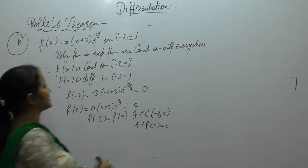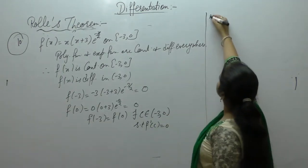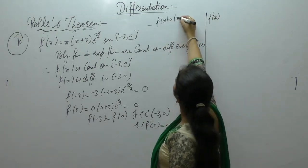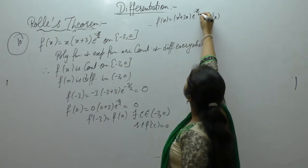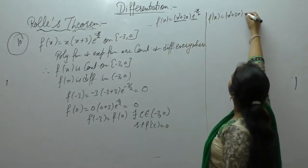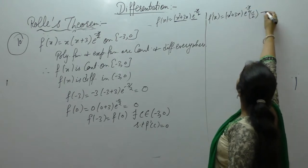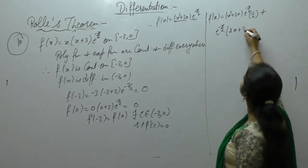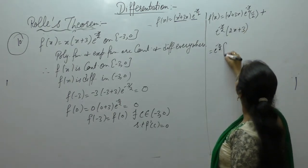Now find f'(x). We can write f(x) = (x² + 3x)·e^(-x/2). Applying the u·v product rule: first function times derivative of second, plus second as it is times derivative of first. That gives (x² + 3x)·(-1/2)e^(-x/2) plus e^(-x/2)·(2x + 3). Taking e^(-x/2) common.